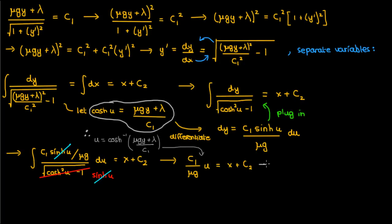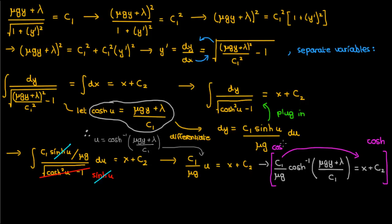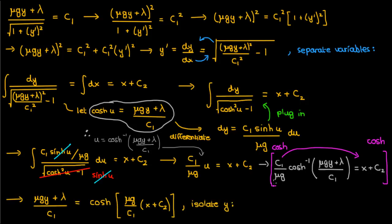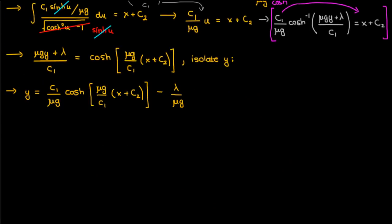Plugging that inverse hyperbolic cosine in for u, we divide by the constant on the left and then take the hyperbolic cosine of both sides. All that's left is to isolate for y, and here's what we get. This is the equation for our catenary.